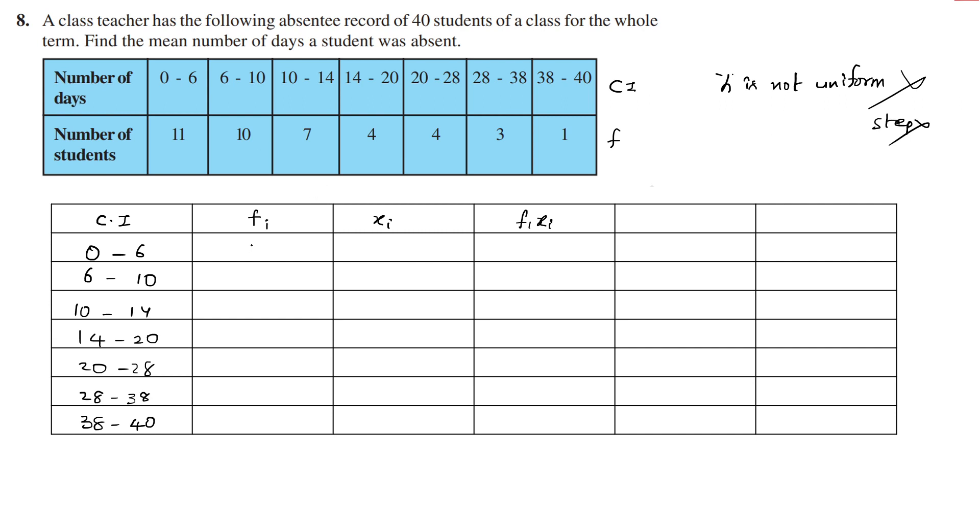Now the fi values (frequencies) are: 11, 10, 7, 4, 4, 3, 1. Next, xi represents the class mark, the middle value of each class interval. So for 0 to 6 the middle value is 3, for 6 to 10 it's 8, for 10 to 14 it's 12, for 14 to 20 it's 17, for 20 to 28 it's 24, for 28 to 38 it's 33, and for 38 to 40 it's 39.